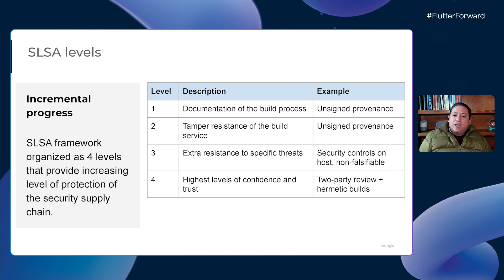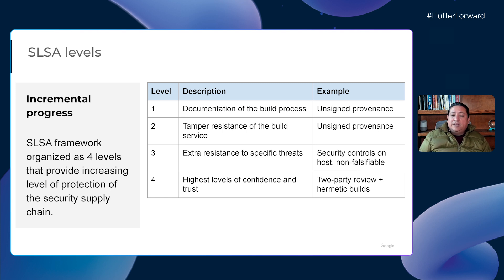SLSA is organized into four different levels, providing increasing integrity warranties. Level one requires automated builds and documentation of the build process using provenance. This level does not prevent tampering, but it helps with vulnerability management and helps consumers understand the risks they are taking. Level two requires source code version control and a build system that generates authenticated provenance, providing tampering protection as long as the build service is trusted. Level three requires source and build platforms to warranty auditability of source code and integrity of provenance, protecting against threats that target the build process. Level four requires two-person code review and hermetic reproducible builds, providing great confidence that the software has not been tampered with.